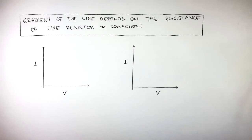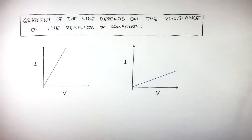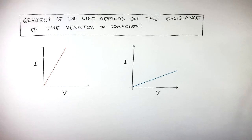Here are two graphs where potential difference is on the x-axis and current is on the y-axis. As the lines are straight, we can see how they observe Ohm's law, as potential difference is directly proportional to current.